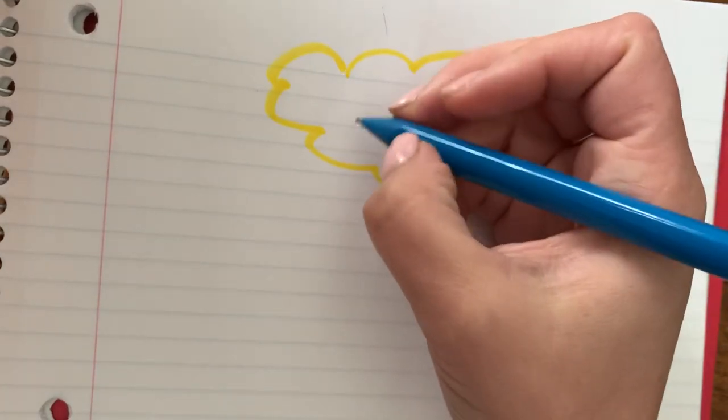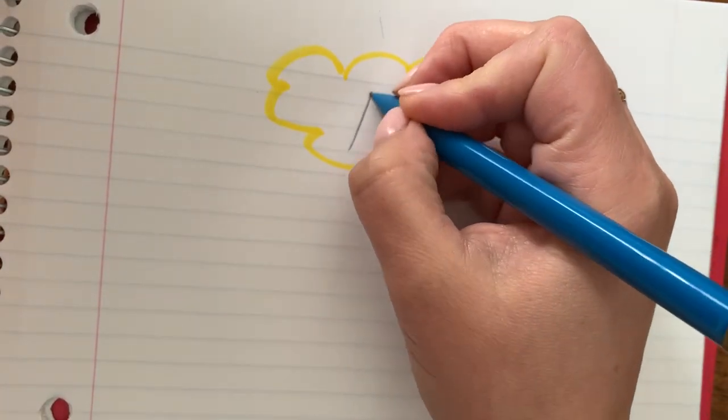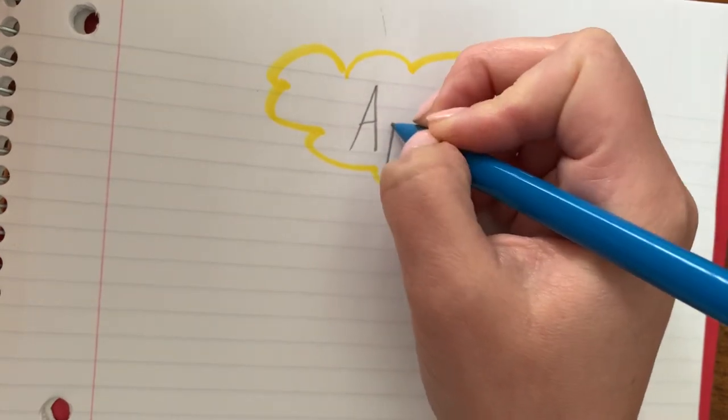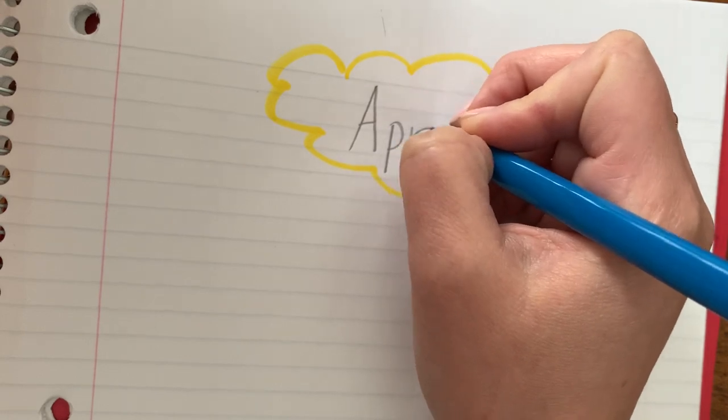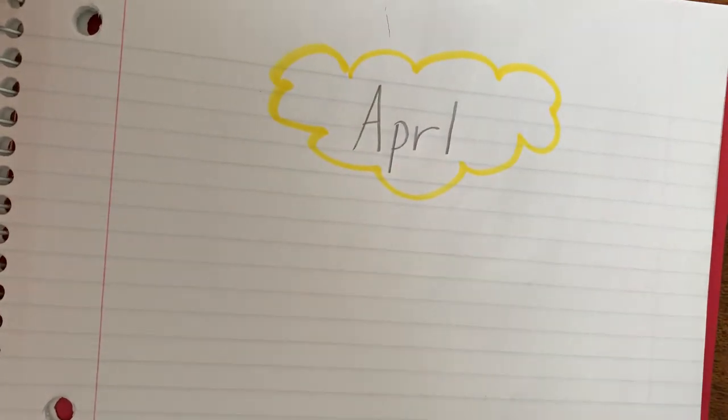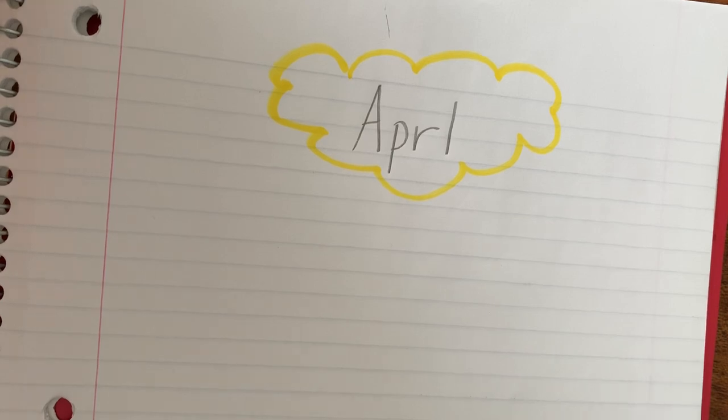So my birthday is in April, so everybody. So I'm going to sound out April. So A-P-R-L. So I put my April in my planning bubble and now I'm ready for my sentence.